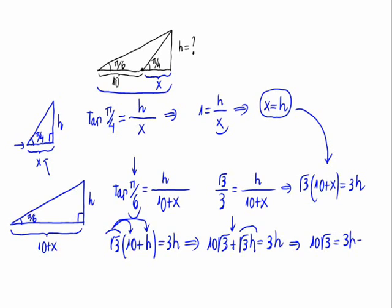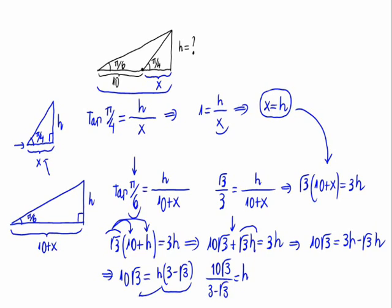The square root of 3 times h goes to the other side as minus the square root of 3 times h. So, 10 times the square root of 3 would be equal to 3h minus the square root of 3 times h. The common factor is h. So, 10 times the square root of 3 is equal to h times 3 minus the square root of 3. We move this to the other side, it will appear dividing. Therefore, we have 10 times the square root of 3 divided by 3 minus the square root of 3 equals h.